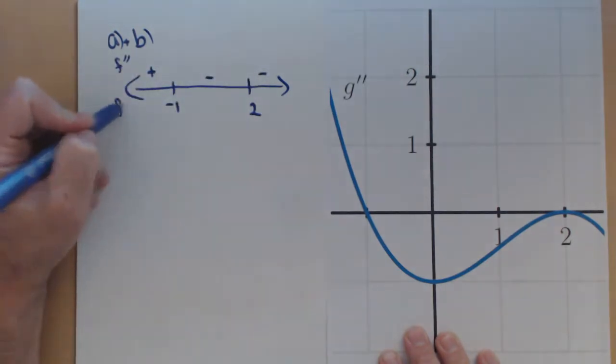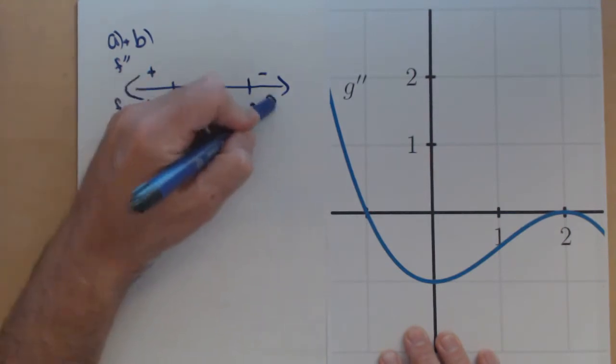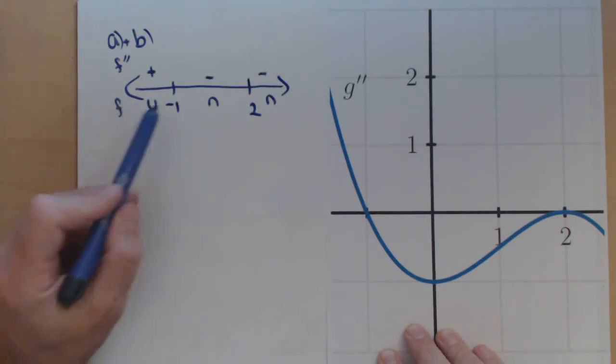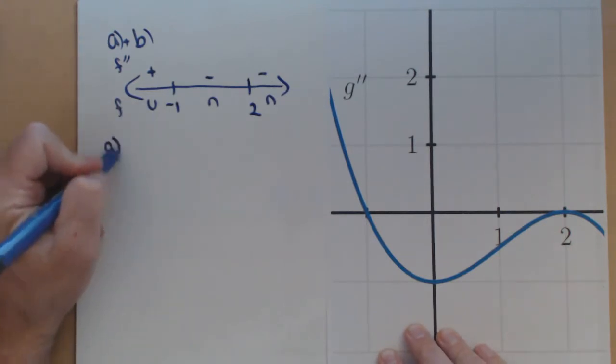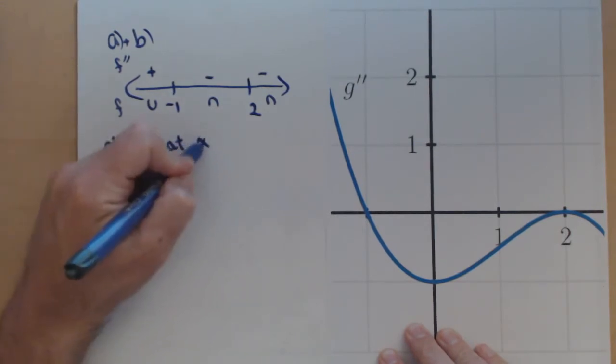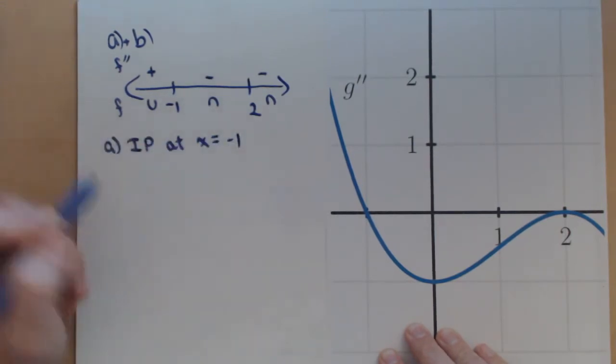Now for our original graph, that means concave up, concave down, concave down. So we do have one inflection point at x equals negative 1.